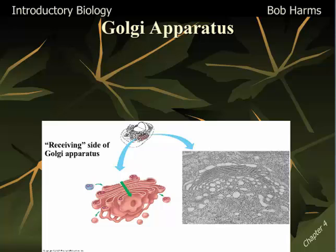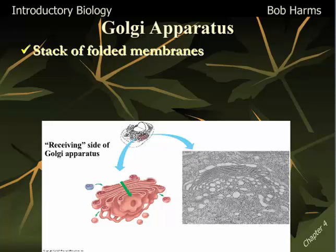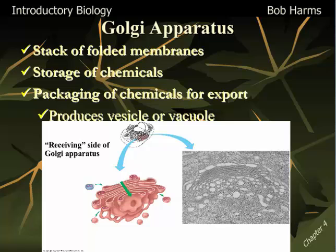Next up is the Golgi apparatus, or Golgi body — just a stack of membranes. I always think of pancakes — a stack of flat membranes all piled up together. The Golgi has two major functions: it temporarily stores up chemicals and isolates them so they don't interfere with the rest of the cell's chemistry, but more importantly it's the packaging center of the cell. When it's time to take a chemical and export it outside of the cell, the Golgi will package it into a small vesicle or vacuole. So chemicals are brought to the Golgi, packaged up, and then shipped out of the cell.